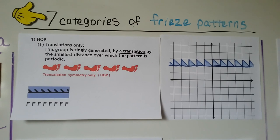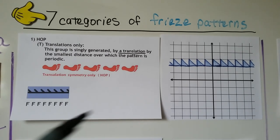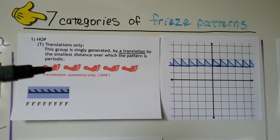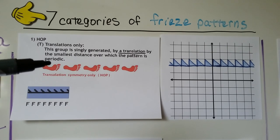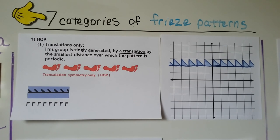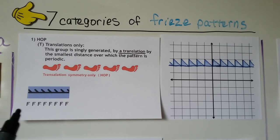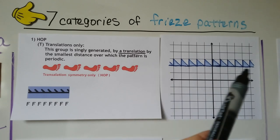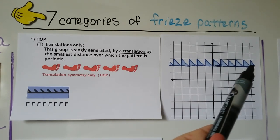We have seven categories of freeze patterns. Our first one is a hop. Imagine hopping on one foot — the toes are pointing to the right and the arch is all on the same side. It's translations only, and this group is singly generated by a translation by the smallest distance over which the pattern is periodic. It could be a pattern like this, or if we had an F that just repeatedly hopped across, it would be just translating across.